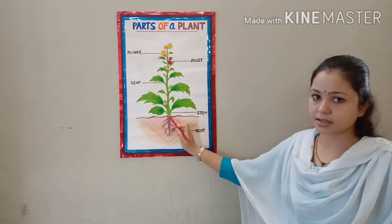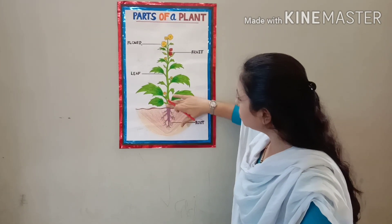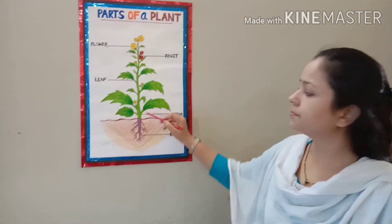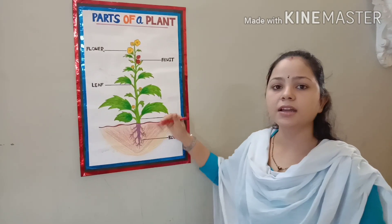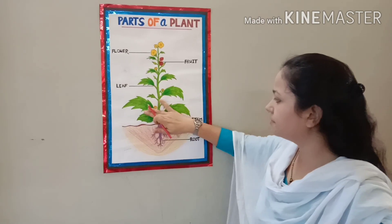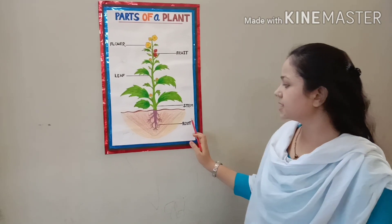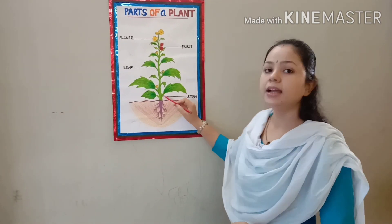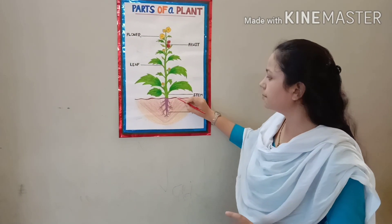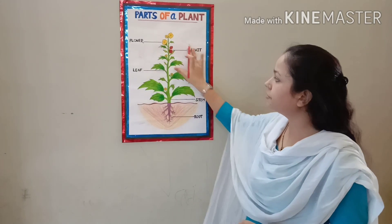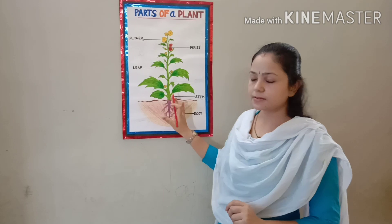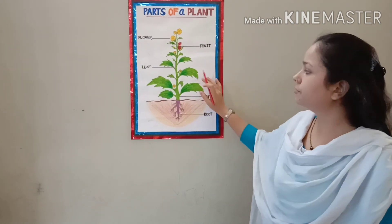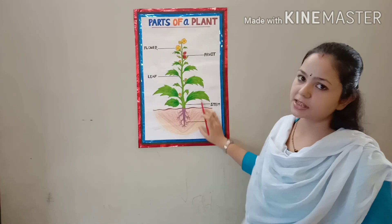S-T-E-M, stem. This is stem. Stem grows above the ground. Stem holds the plant above the ground. As I told you, root gives water and minerals to the stem. Stem carries that water and minerals to the different parts of the plant. Stem also carries the food prepared by the leaves to the different parts of the plant.